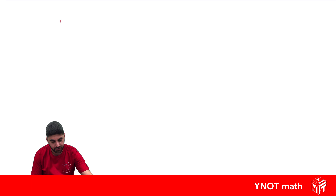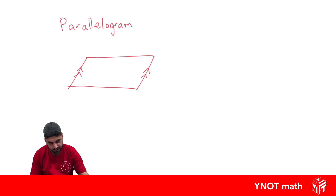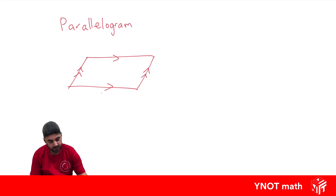First we're going to look at a parallelogram. A parallelogram is just a tilted rectangle where that side is parallel to that side and that side is parallel to that side. To find the area we just need to know the base length and the perpendicular height of the parallelogram.